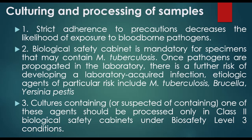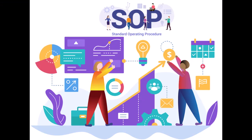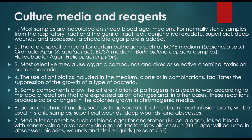Use of a biological safety cabinet is mandatory for specimens that may contain Mycobacterium tuberculosis. Once pathogens are propagated in the lab, there is a further risk of developing a lab-acquired infection. Etiologic agents of particular risk include Mycobacterium tuberculosis, Brucella, and Yersinia pestis. Cultures containing one of these agents should be processed only in Class 2 biological safety cabinets under Biosafety Level 3 conditions, and the SOP should be followed according to the organisms and cultures.